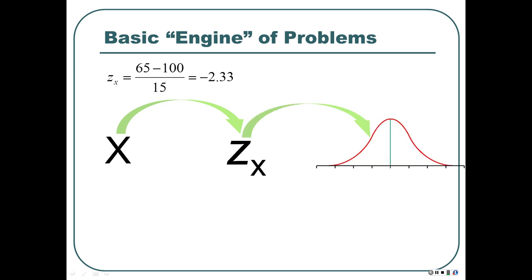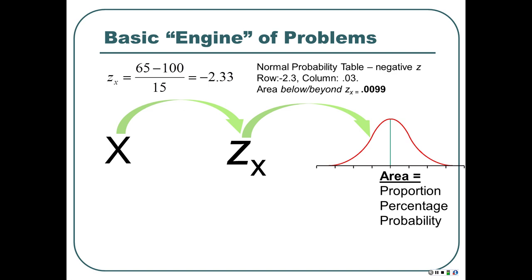The area below or beyond z — I say 'below' because it's to the left, 'beyond' because it's going away from the mean — is 0.0099, so about 0.01. That's what we want to find. So about 1% of the time we should find a person who has an IQ of 65 or below. In R it's a little more precise. The distribution has a mean of 100 and a standard deviation of 15. R told us the area is slightly less than what the table told us, but it's pretty close.